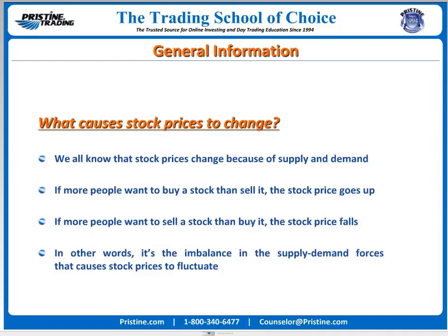Are we in agreement so far? Part two is going to be on April 6th, next week. So it's the imbalance in the supply-demand relationship that causes stock prices to fluctuate.